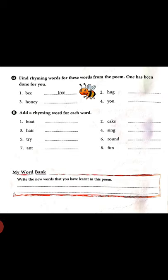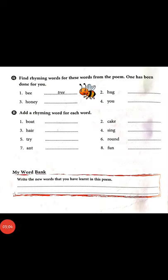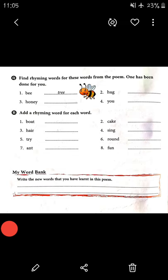For the second word, 'hug' — the word 'ladybug' is in the poem, so we write 'bug'. Number three, 'honey' — the word 'funny' is in the poem, so we write 'funny'. Number four, 'you' — 'just as woodland creatures do', so for 'you' we write 'do'.